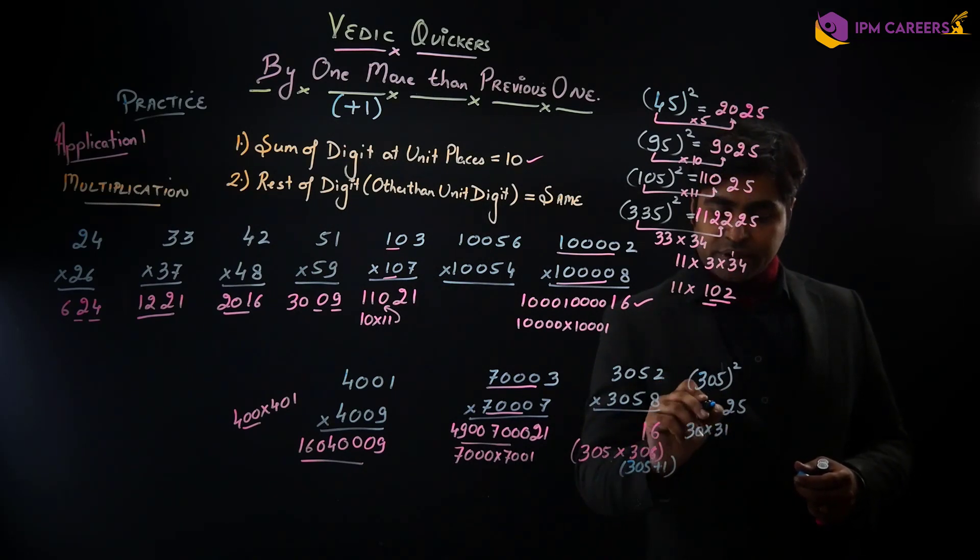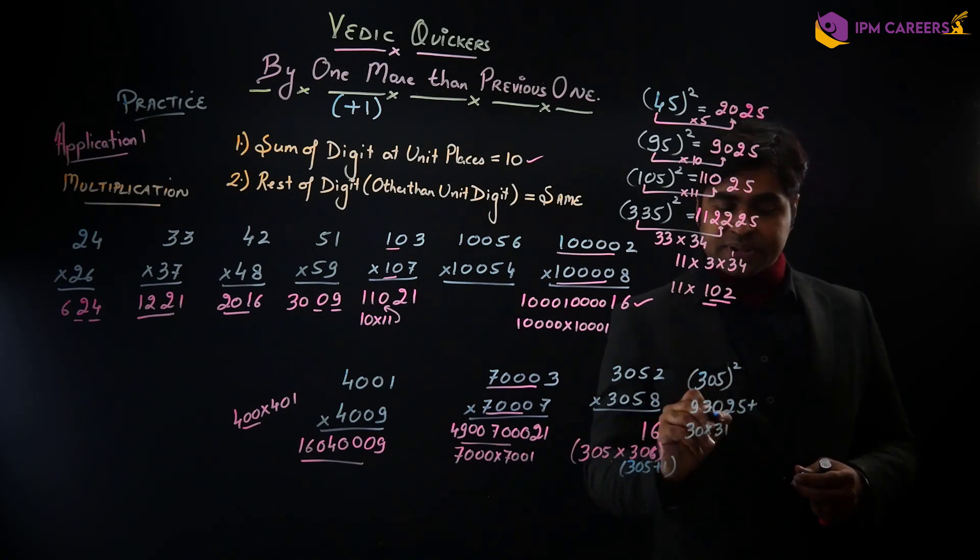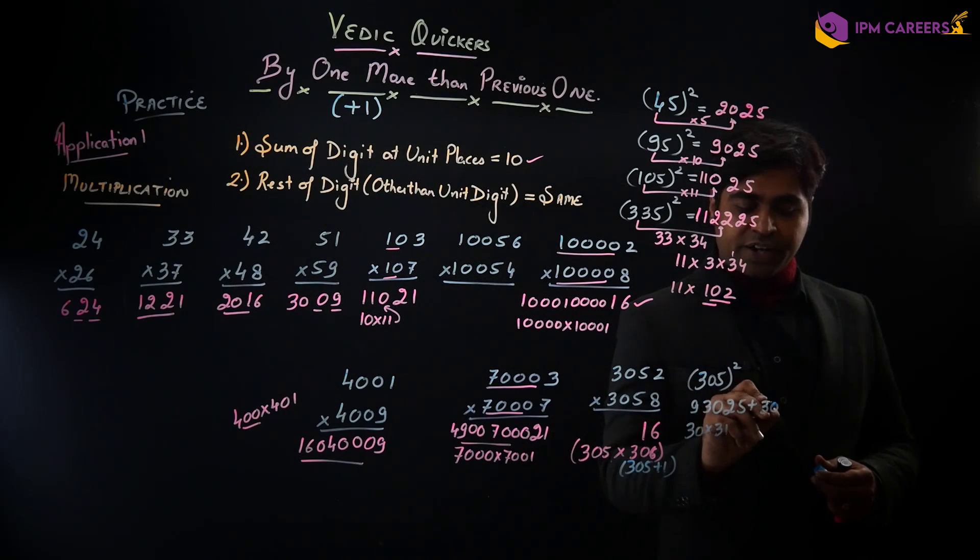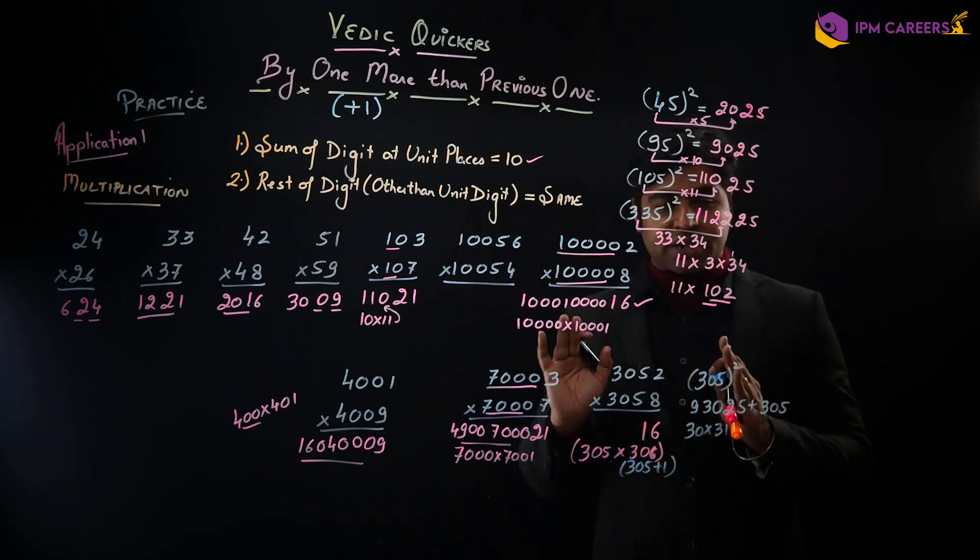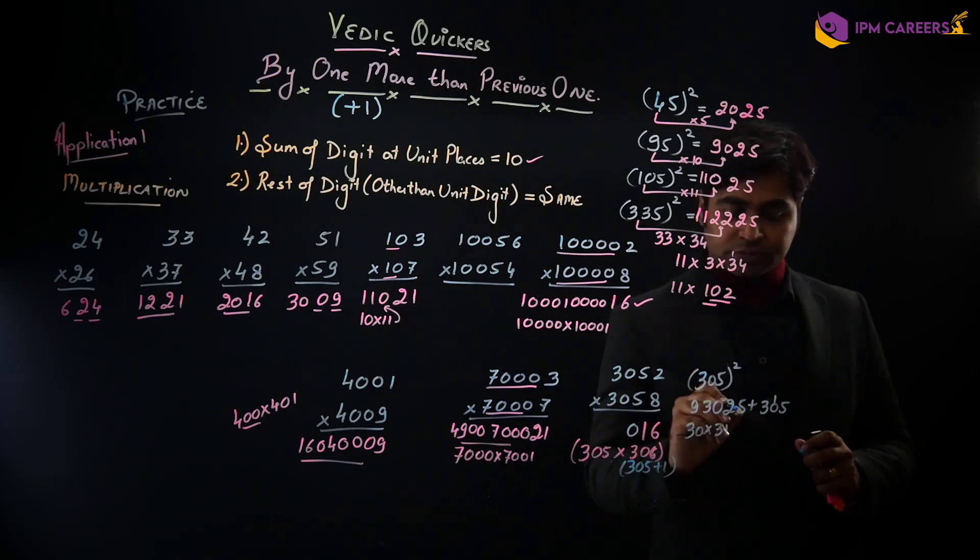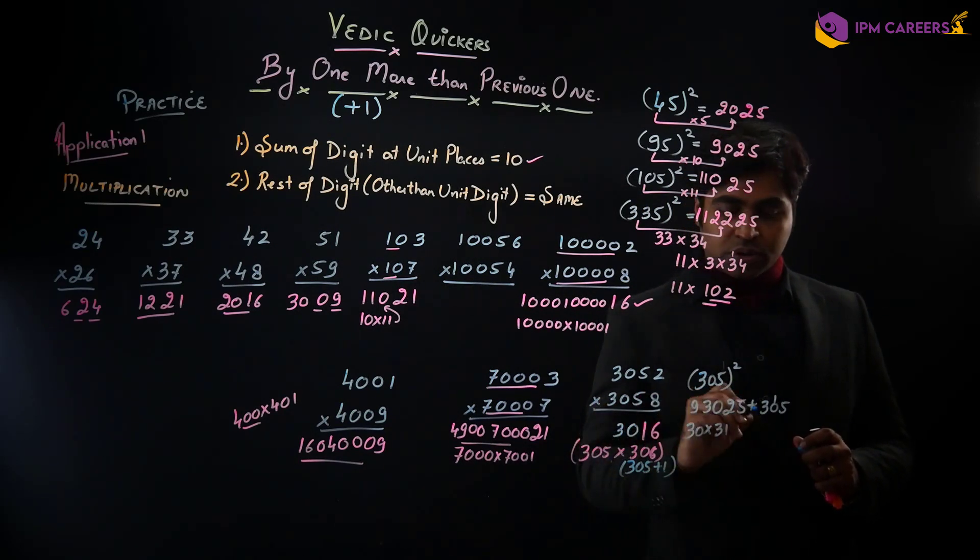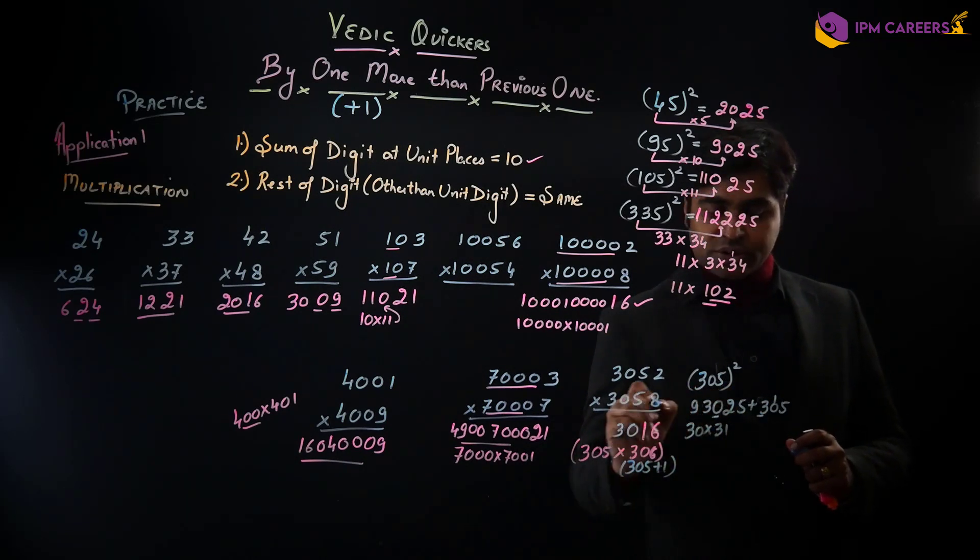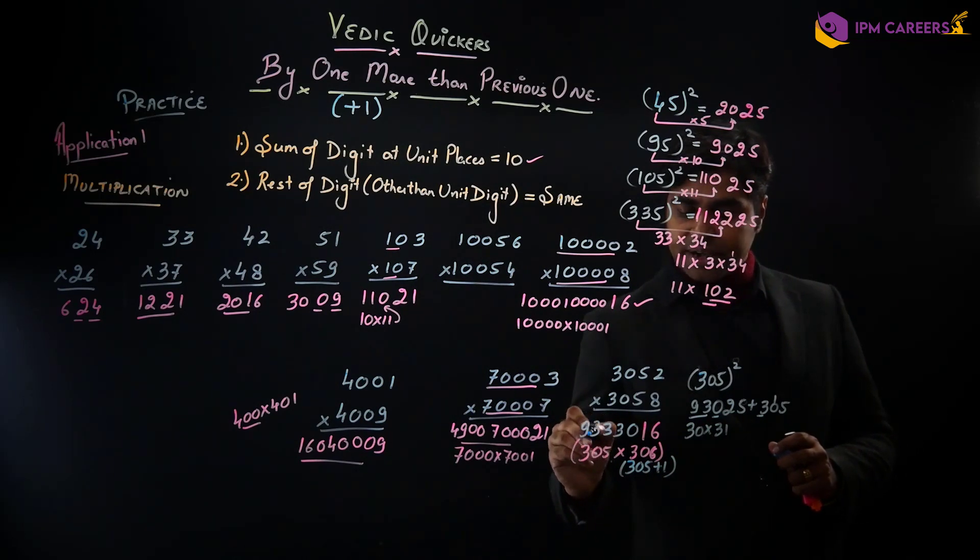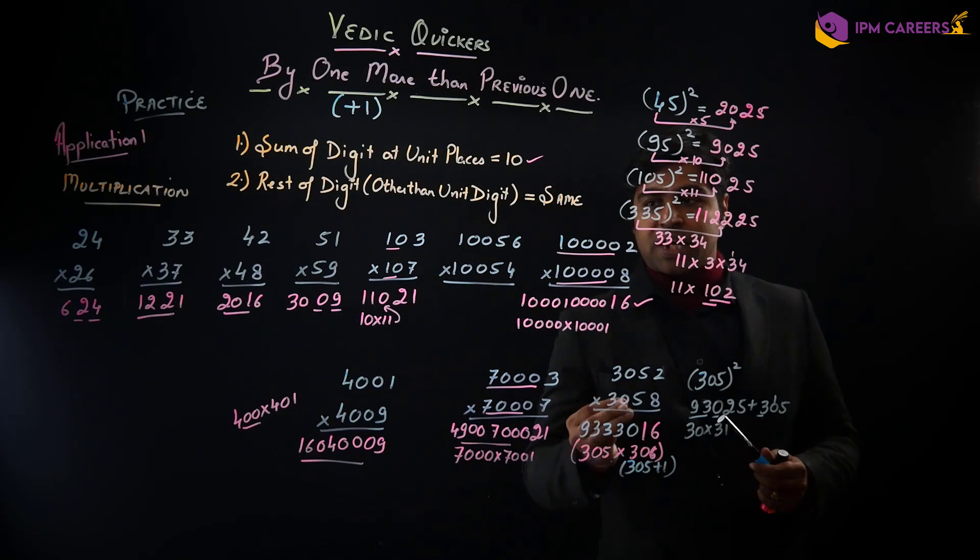So 305 into 305 plus 305 would become the answer. Thik hai, ab 305 ka square nikalna toh bada aasan hai. 5 ka square 25, aur 30 multiplied by the next number 31. Toh 10 aayega, 31 ya 3 aayega, 33 aayega. Ismei agar mujhe bas kya add karna padega, 305, toh ho mera answer ho jayega. Thik hai, so 5 plus 5, 10. 2 plus 0 plus 1, 3. Aur 3 plus 0, 3. Aur 93 toh pura aayega hi, so 93, 3, 3, 0, 1, 6 would become the answer to this.